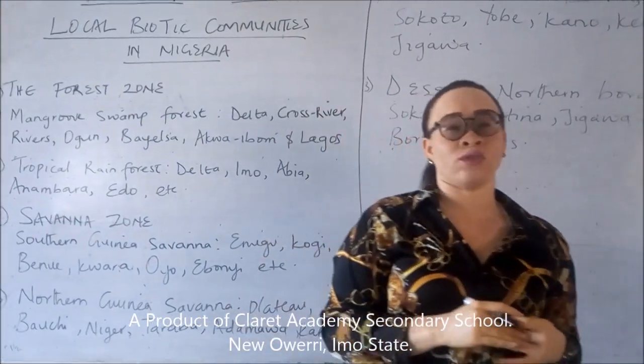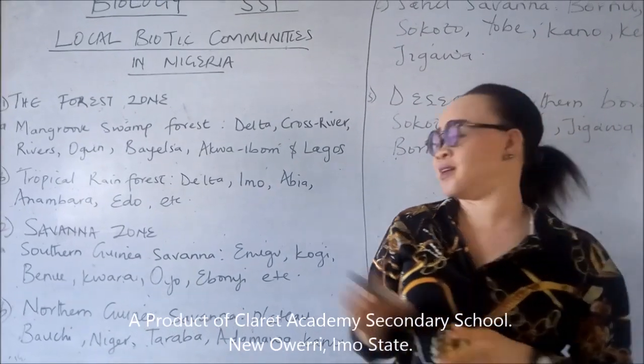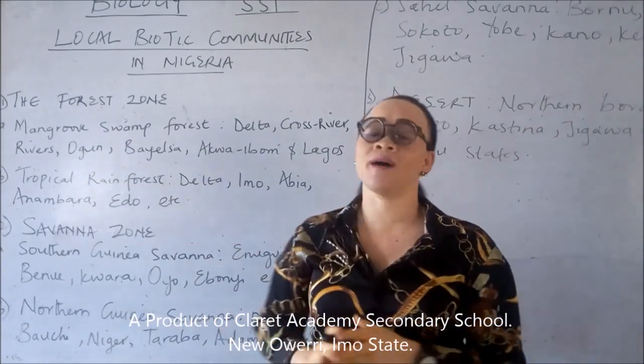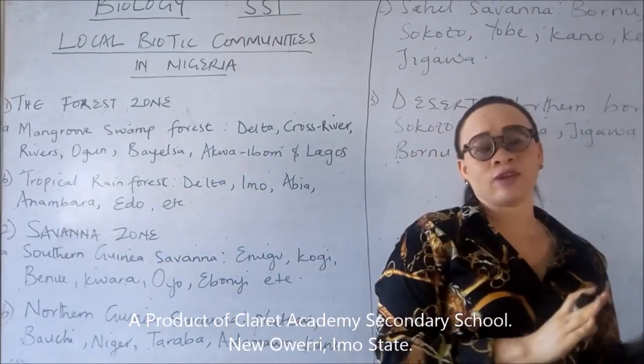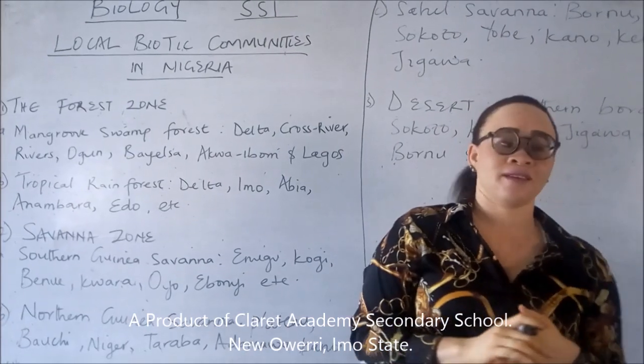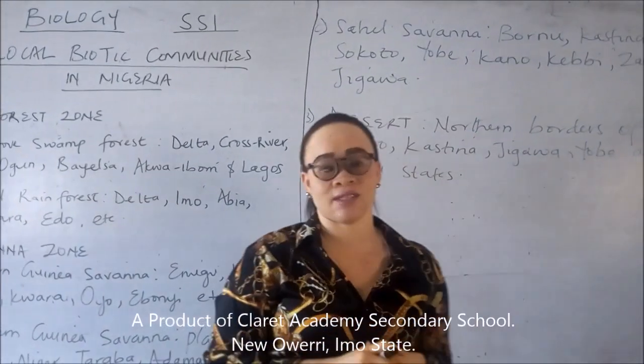is also called the grassland area. Now in the savannah zone, you have the southern Guinea savannah, you have the northern Guinea savannah, and you have the Sahel savannah.